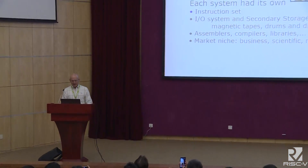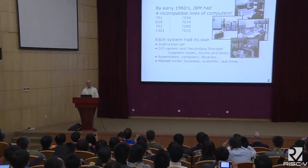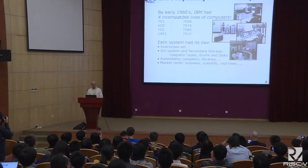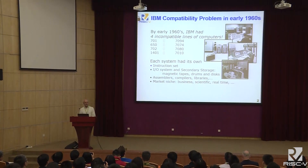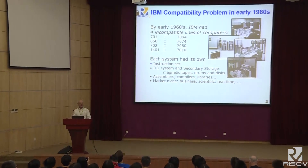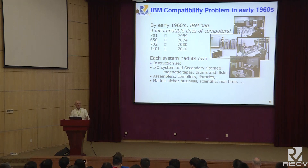IBM had a problem. They had four different lines of computers, all with their own different instruction sets, their own I/O system, their own storage system, different assemblers, compilers, and libraries. Each one had a different marketplace: scientific computing, business data processing, or real time. IBM ran four independent businesses.